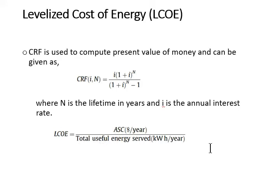So LCOE is declared as average price per kilowatt hour of the useful energy generated by the system, and it can be given by this equation. This equation gives the levelized cost of energy. It means if we divide the annual system cost by the total energy served to the load in a year, it will give us LCOE.